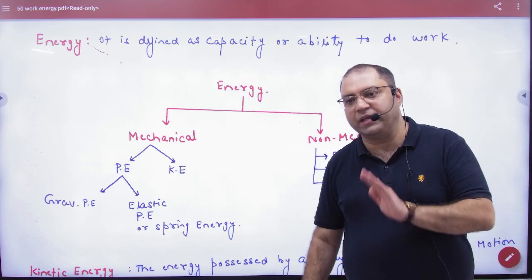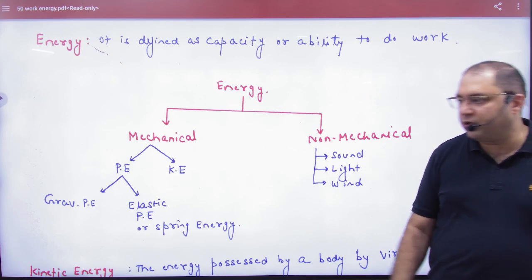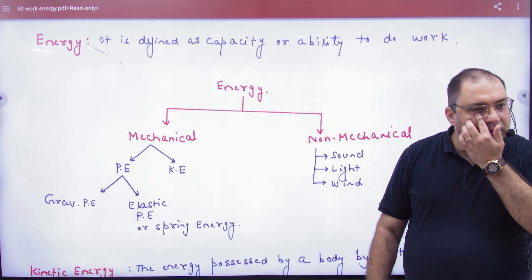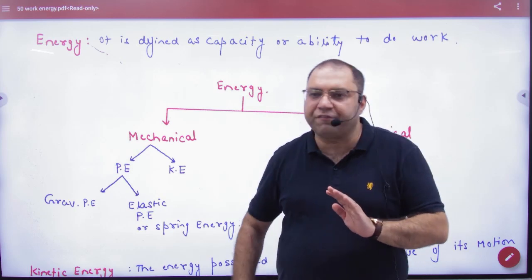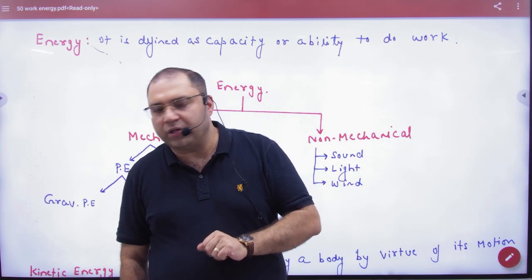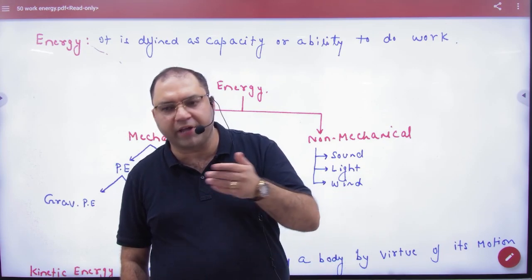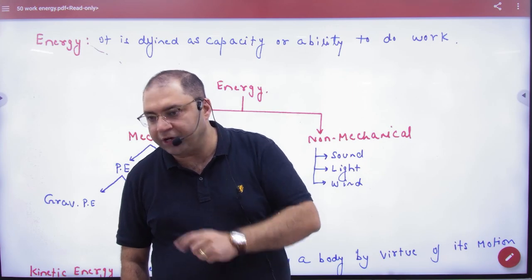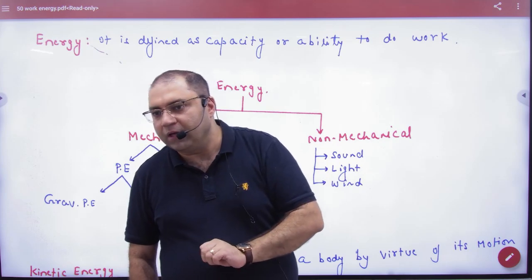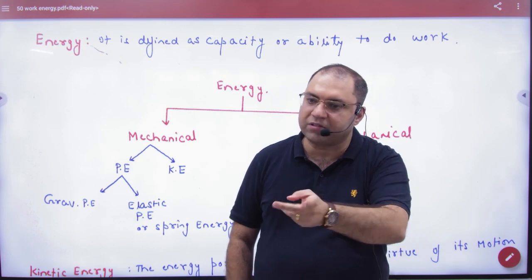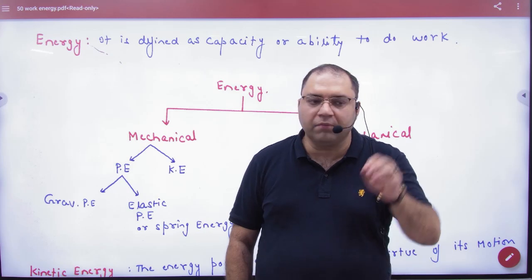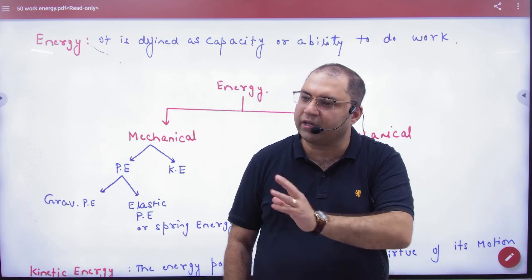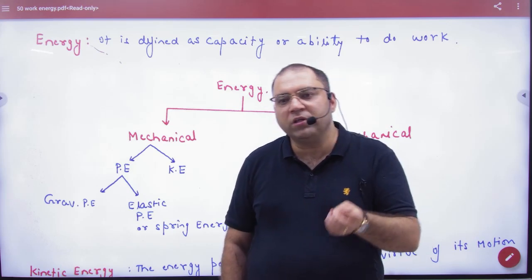Mechanical energy is divided into two parts: potential and kinetic. When you study energies across plus one and plus two, you will notice different types of forces. Like when we studied Newton's laws, we studied tension and normal reaction — electromagnetic force. Then in plus two, charges give Coulomb force, and there is also magnetic force. These are different types of forces with different names.